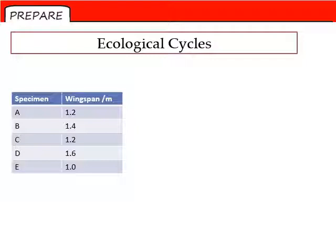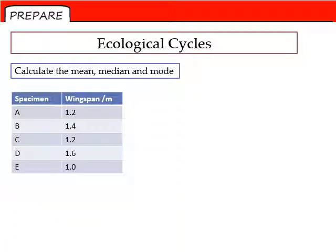Before we crack on with ecological cycles, I'd like you to have a go at some math for me. Here we have a set of data: five specimens have been taken and their wingspans have been measured in meters. I'd like you to calculate the mean, the median, and the mode of this data. Please pause here and have a go at calculating those now.